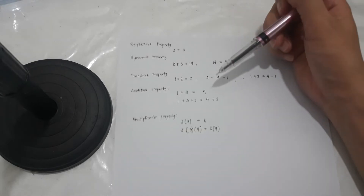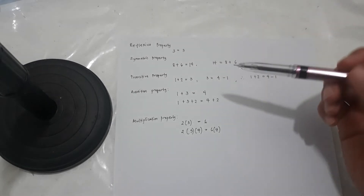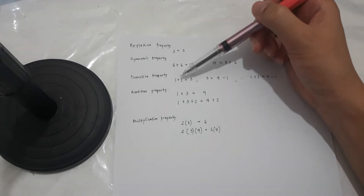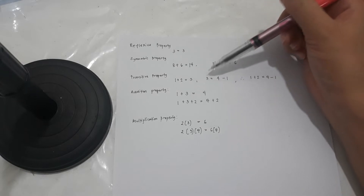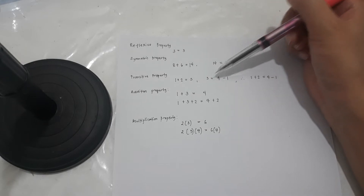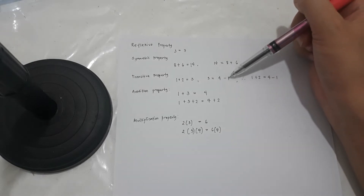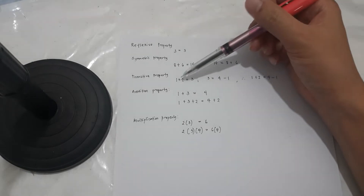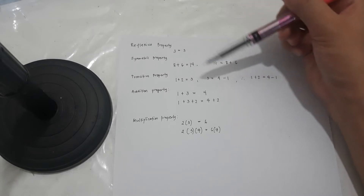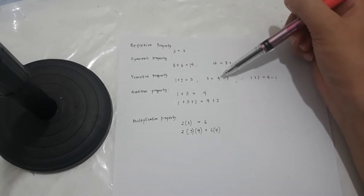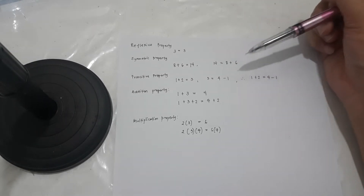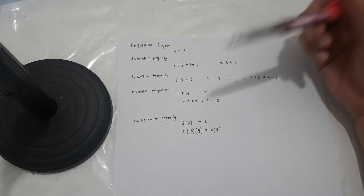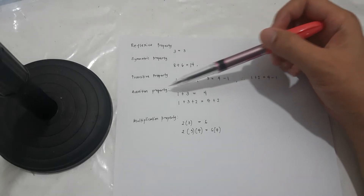The next one is the transitive property. If 1 plus 2 is equal to 3 and 3 is equal to 4 minus 1, therefore 1 plus 2 is equal to 4 minus 1.